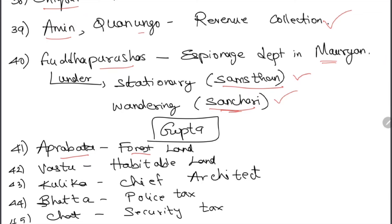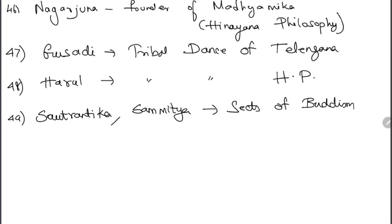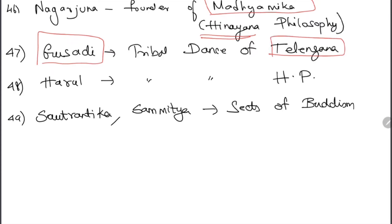In the Gupta Empire: Aprabata means forest land; Vastu means habitable land; Kulika were chief architects. Bata was a police tax — a tax paid for the police department to function. Chata were a security tax. Nagarjuna was the founder of Madhyamika philosophy — importantly, this is a Hinayana philosophy, not Mahayana.